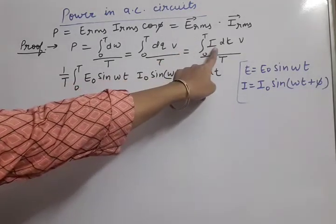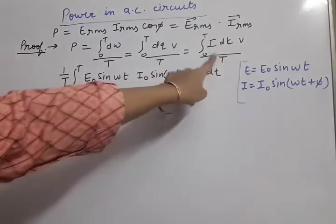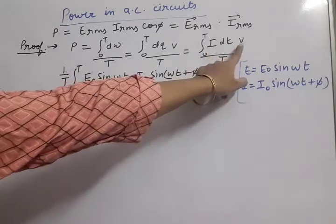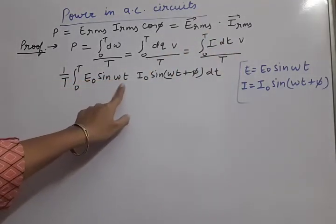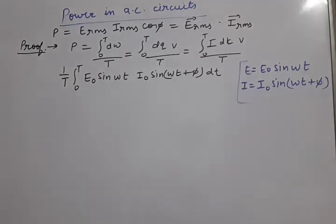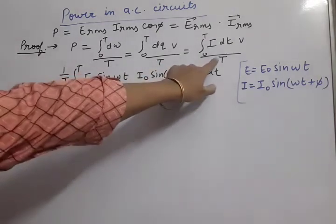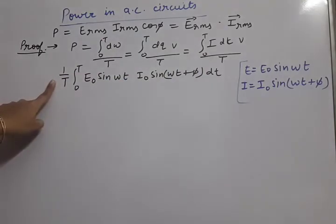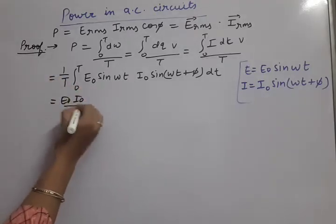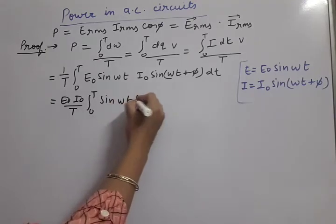After that, dQ can be written as I·dt. So now we substitute the values: voltage is E₀ sin(ωt) and current is I₀ sin(ωt + φ) dt. The integration is with respect to time, with limit 0 to capital T, and the denominator T is written as 1/T outside. The constants E₀ and I₀ come out of the integration, leaving sin(ωt) and sin(ωt + φ) inside.